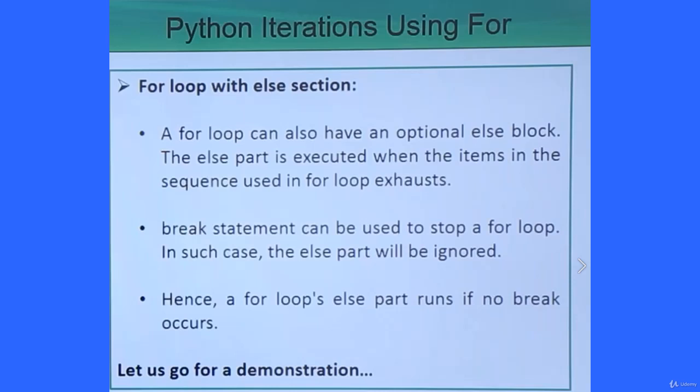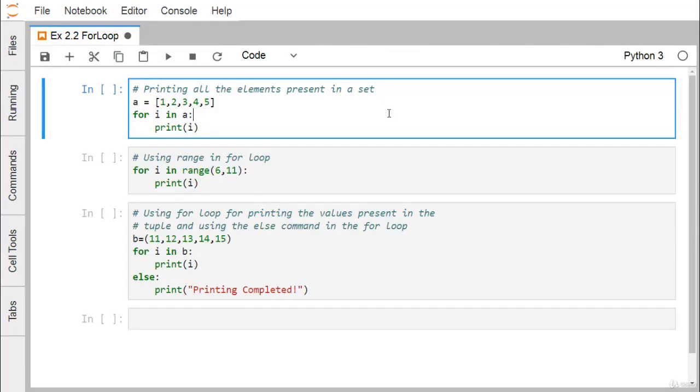Let us go for some practical demonstration to show you that how this for can be used in our python code. Let us find that how for loop can work in python. Here we have defined one list. We know that list elements are to be separated by commas and they are to be enclosed within this third brackets. This is a list here. Printing all elements present in a set and here this particular set is nothing but a list. For i in a print i that means in each and every iteration, in each and every loop in this particular for using this for we are picking up one element from the list at a time and the respective element is going to get printed.